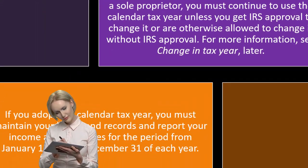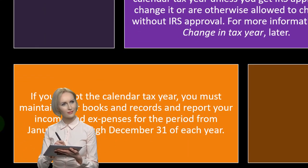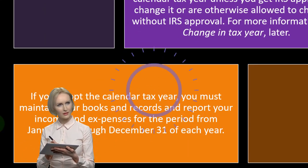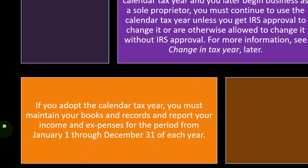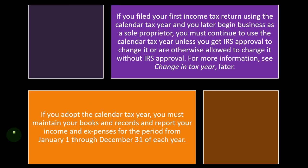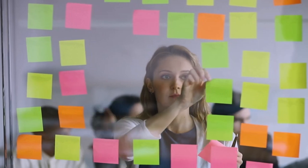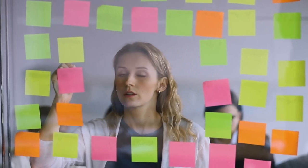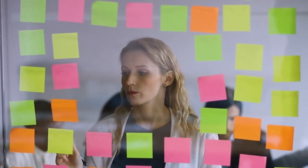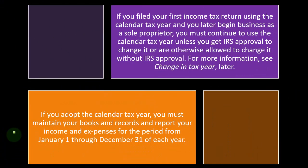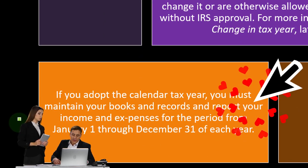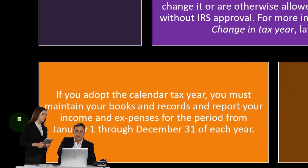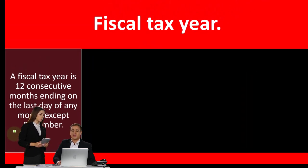Again, you want to get off to the right start the way you want to go forward. Plan it out, because it's more difficult to change — not impossible, but you have to have rationale and go through a process to change it, because the IRS wants consistency. If you adopt the calendar year, you must maintain your books and records and report your income and expenses for the period from January 1st through December 31st of the year.